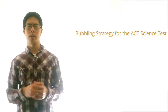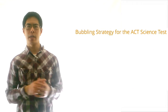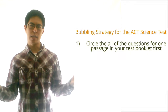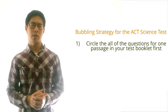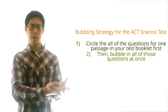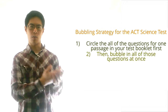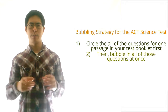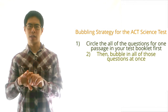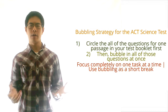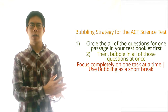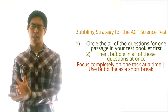To solve these two problems with the traditional method for bubbling, here's what we recommend for the ACT science test: circle your answers for all of the questions for one passage first, and then bubble in all of these answers on your bubble sheet at once. This means that you'll be bubbling in five, six, or seven questions at once. This will both allow you to focus completely on each passage as you're working on it, as well as help you make sure that you're bubbling in the numbers correctly.